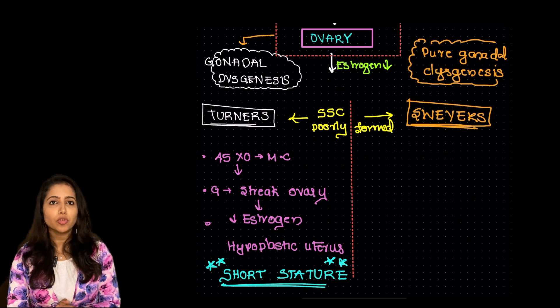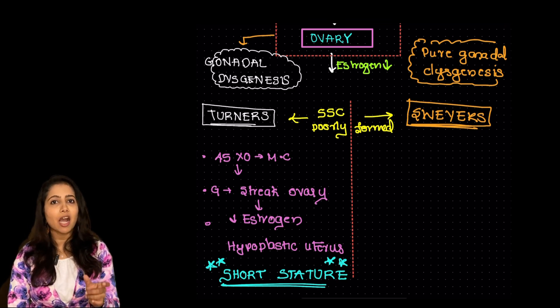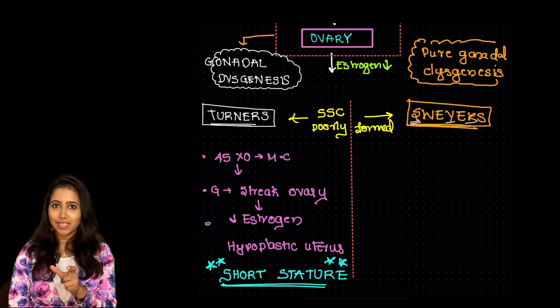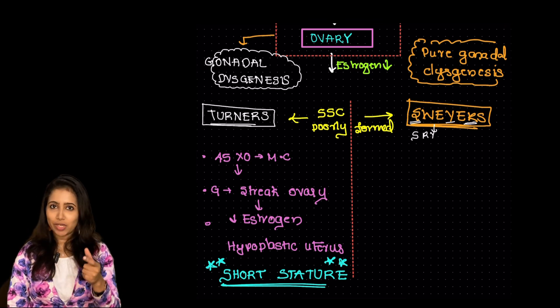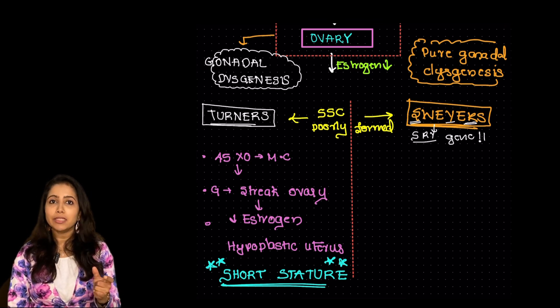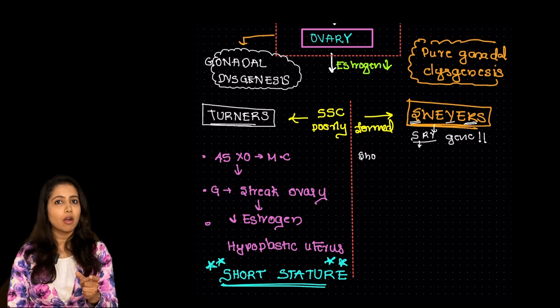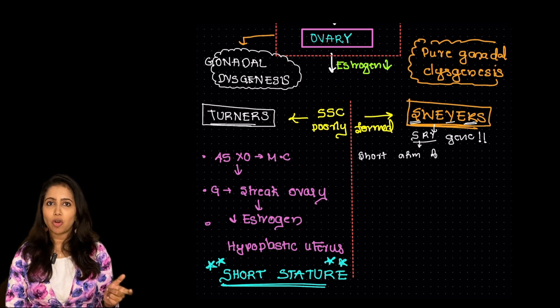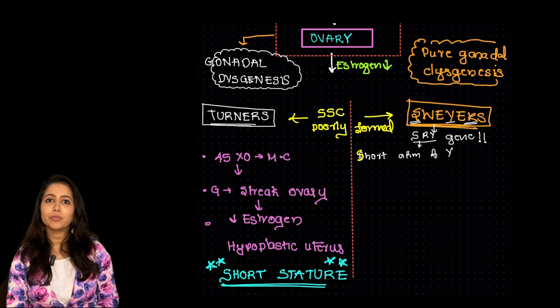In Swyer's syndrome it's due to the gene mutation in SRY gene. Swyer's SRY gene you can correlate it from there and this is due to the problem in the short arm of Y chromosome. Short arm of Y chromosome.